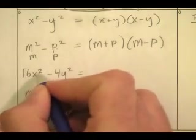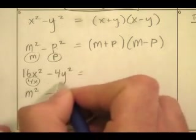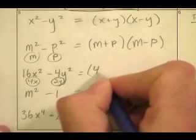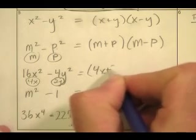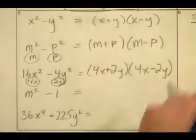So I say, what's the square root of this guy? It's going to be 4x is the square root of that guy, right? What's the square root of 4y squared? Isn't that 2y? Yeah. So I get 4x minus 2, oh, sorry, plus 2y times 4x minus 2y. Yeah!